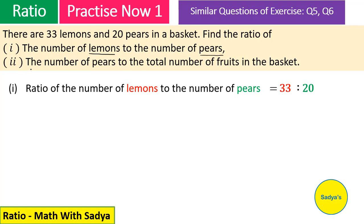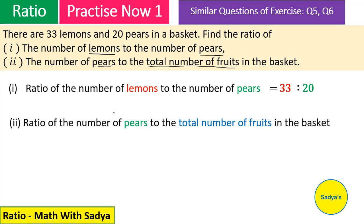Now, second part is the number of pears to the total number of fruits in the basket. So, the ratio of the number of pears to the total number of fruits in the basket would be - we write the number of pears. Pears kitne hain? 20. Ratio. Total number of fruits in the basket - 33 lemons hain and 20 pears hain. So, total kitne honge? 33 plus 20.